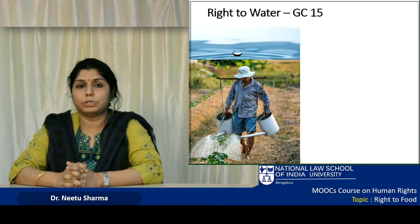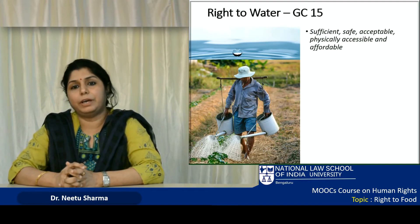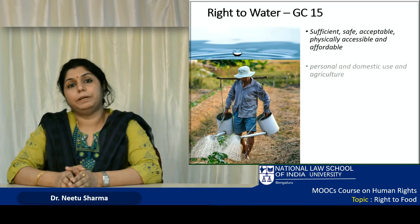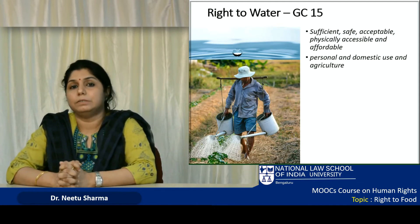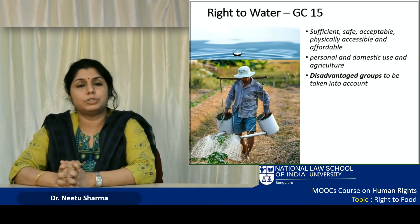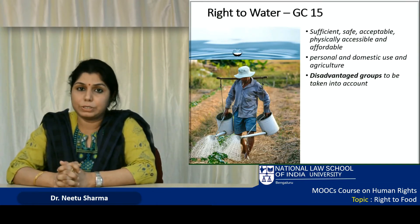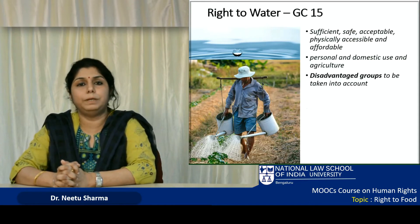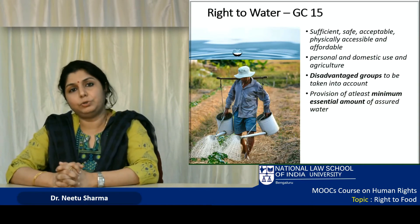General Comment 15 of the Committee on ESCR is very important when it comes to right to water. General Comment 15 specifically said that everybody should have access to sufficient, safe, acceptable, and physically accessible water which is affordable. Water should be available for personal and domestic use. For those in agriculture, they should have sustainable access to water. General Comment 15 also said that state and state agencies should take special care for disadvantaged groups — there should be no discrimination and positive, constructive actions should be taken to ensure everyone without discrimination has access to water.